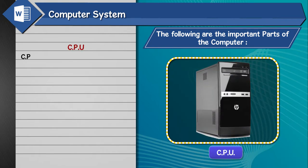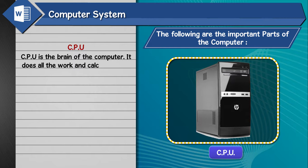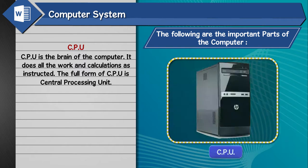CPU. CPU is the brain of the computer. It does all the work and calculations as instructed. The full form of CPU is Central Processing Unit.